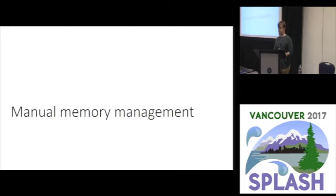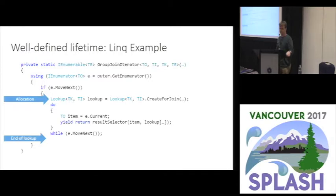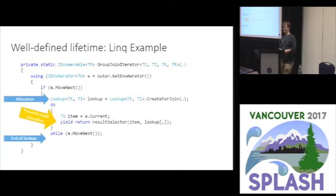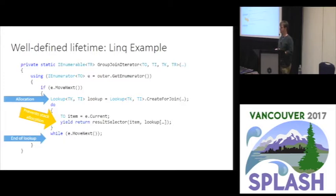What we're proposing is to add a form of manual memory management to .NET. So why would manual memory management be easy? If you look at this piece of code from the system LINQ library, it's doing some join operation — building a lookup structure for one of the enumerations being joined. At the end, it's no longer necessary. This looks like a perfect case for stack allocation. However, C# has this wonderful feature, yield return, which converts the code into a closure, so this is actually dynamically scoped — it lives on the heap, not the stack.